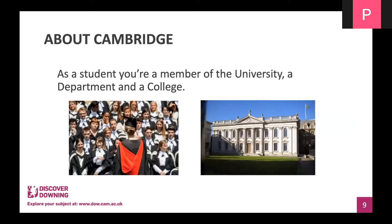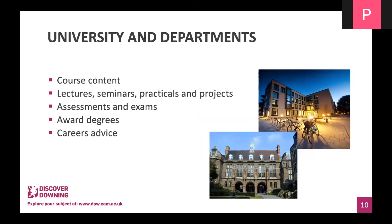When you become a student at Cambridge, you are part of the University of Cambridge, part of a department — in this case the chemical engineering department — and part of a college. The department sets all course content: lectures, seminars, practicals, projects, assessments, and exams, regardless of what college you attend. The university awards the degrees and provides careers advice to all students regardless of their department or college.